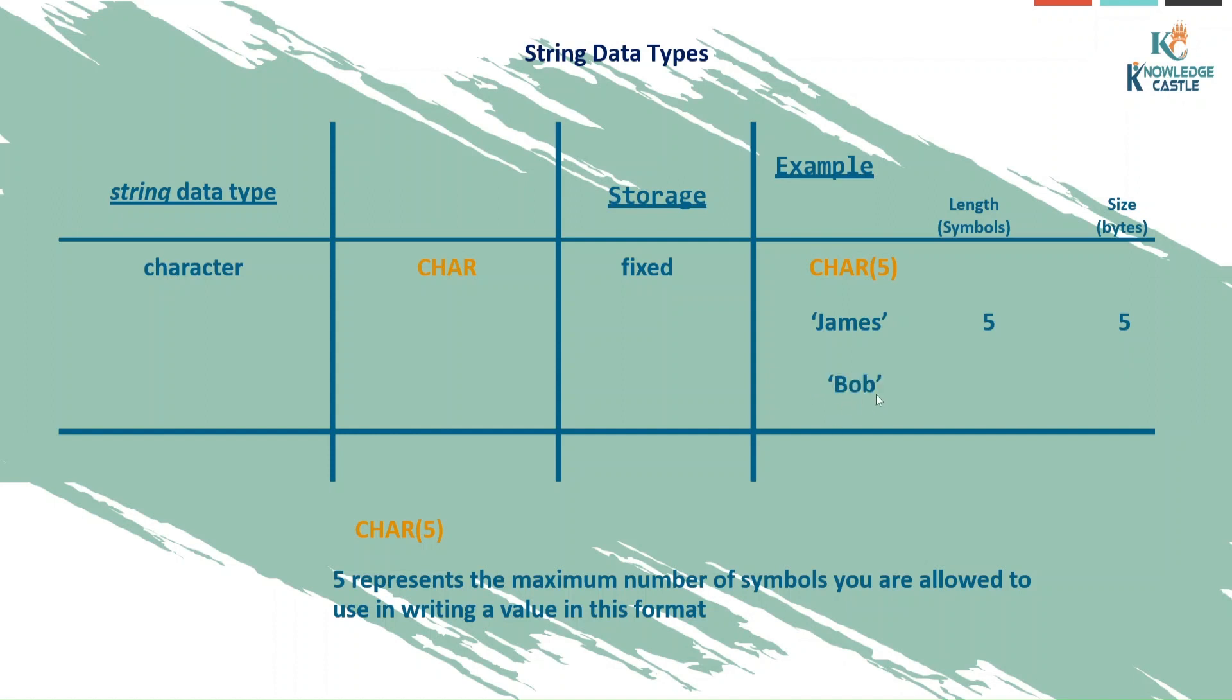Next is Bob. How many symbols are there in Bob? Three. But what will be the size of Bob? Five bytes. Because for character, the storage is fixed. Whatever you're putting here, that is going to be the size for every word. Little bit strange, right? That should not happen.